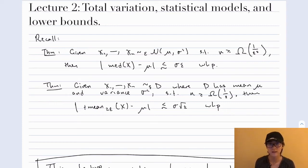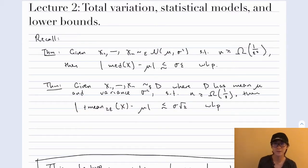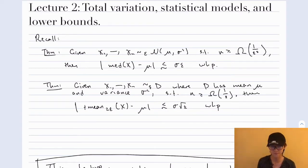Hello, this is the second lecture in my sequence of lectures on robust statistics. In this class, we're going to cover some lower bounds for robust statistics. To do so, we will introduce some important statistical tools, including total variation distance and some statistical models of corruption. So let's get started.